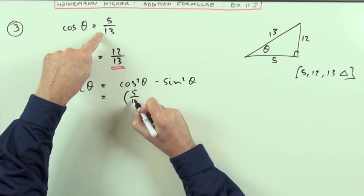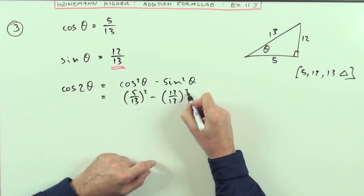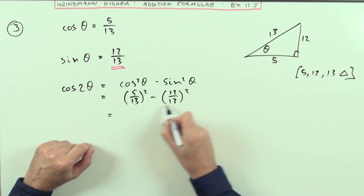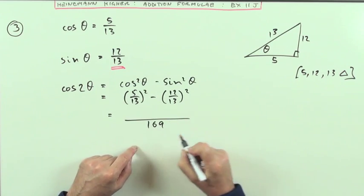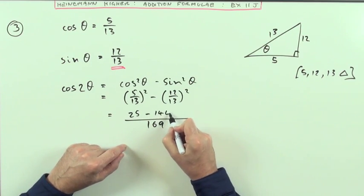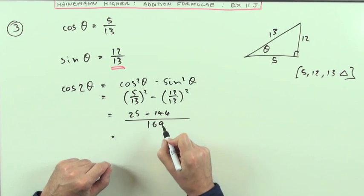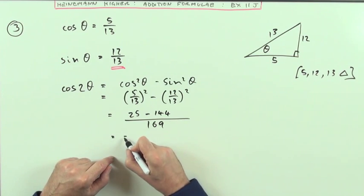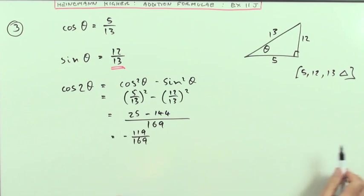That would be 5 thirteenths squared minus 12 thirteenths squared. Well, they're both out of 13 squared, and 13 squared is 169. And then, squaring the tops, I've got 25 take away 144. And when you do 25 take away 144, you get negative 119. So that's going to be negative 119 over 169 for the cos of 2 theta.